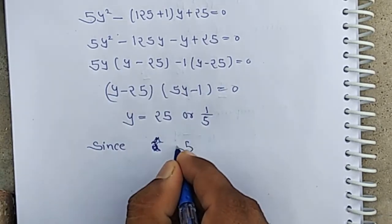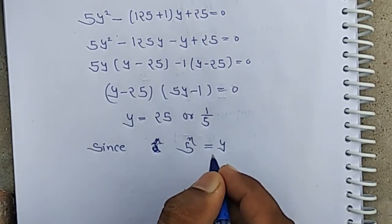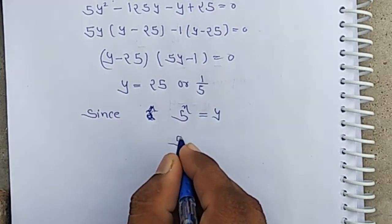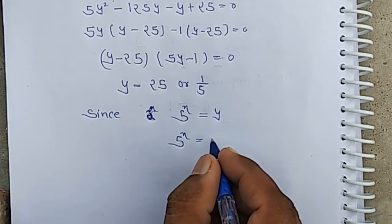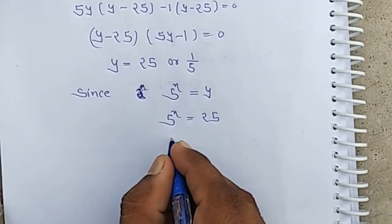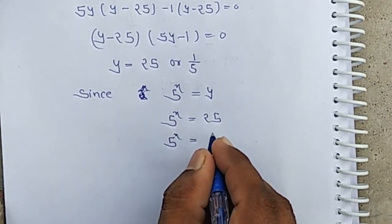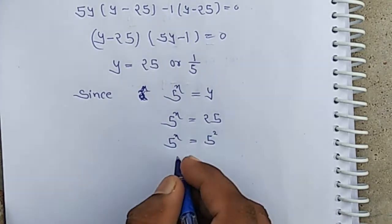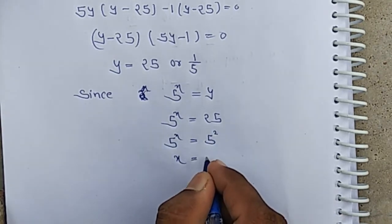Since 5 to the power x equals y, we put the value of y. When y equals 25, we have 5 to the power x equals 25, which is 5 squared. Therefore x equals 2.